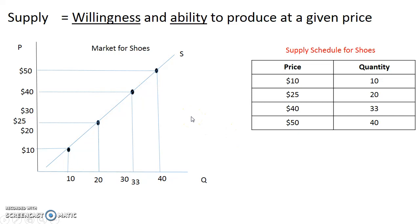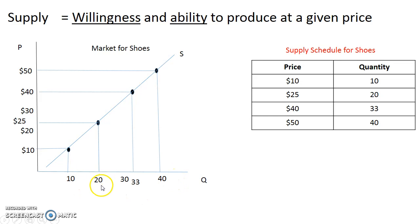As noted with the demand curve, it's really important when creating this graph to have equal increments along your axes. For the horizontal quantity axis, I've used increments of 10. Even though at a price of 40 the quantity is 33, I still draw that line in relation to 30 and 40 — I can't write 10, 20, 33, 40. The same applies to the price axis: equal increments, in this case also 10. The increments for price and quantity don't have to match — you can choose whatever you want — but each axis must have equal increments.